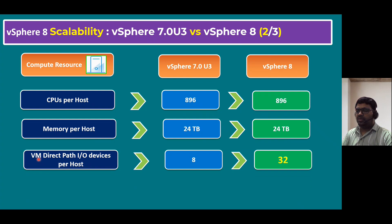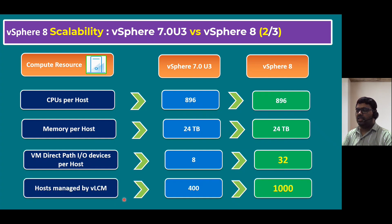When it comes to virtual machine direct path input/output devices per host — these are mini HBA cards accessible through PCI passthrough devices. In vSphere 7.0 the maximum was eight devices, but in vSphere 8 the maximum increases to 32 devices. Another host maximum is hosts managed by vLCM (vSphere Lifecycle Manager): previously 400, and with vSphere 8 a maximum of 1,000 ESXi hosts can be managed using vSphere Lifecycle Manager.